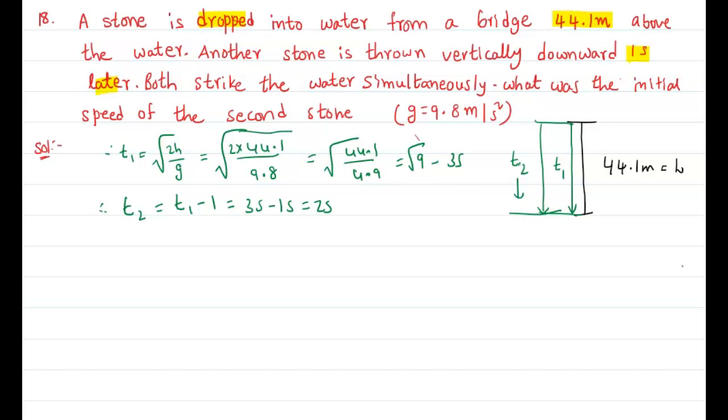What was the initial velocity, the initial speed of the second stone? The second stone dropped from the same height but with initial speed.